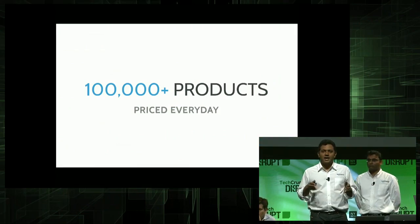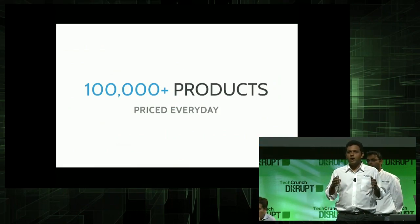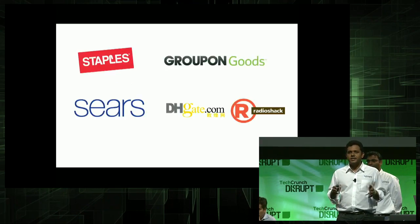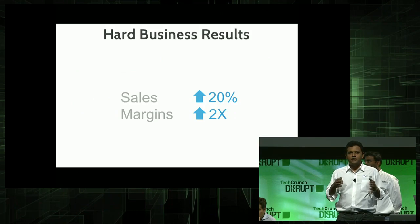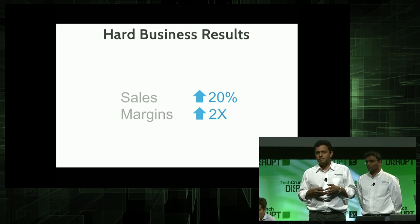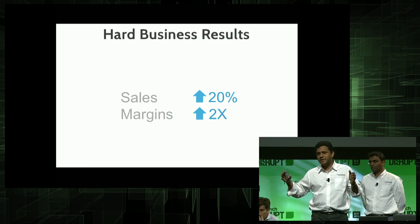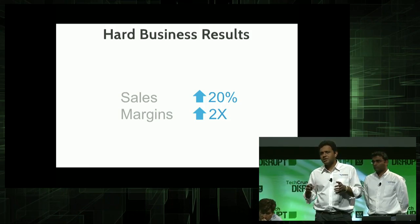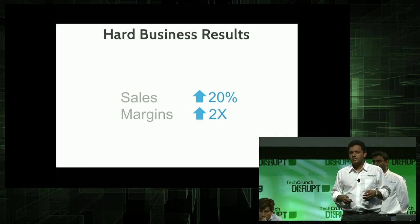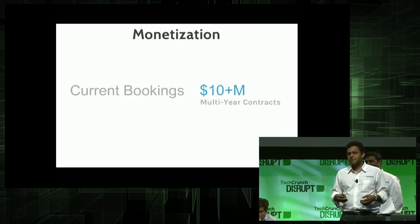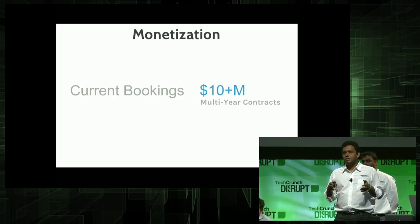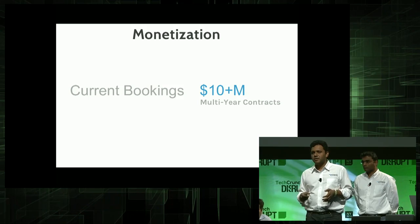Boomerang Commerce is live and in production, pricing over 100,000 products every single day for some of the largest retailers on the Internet, and we are delivering hard business results. We've increased sales by more than 20% on a very large revenue basis, and we've more than doubled margins for many categories. We are a SaaS product — we monetize with monthly subscription fees, and we currently have bookings over $10 million in multi-year contracts.